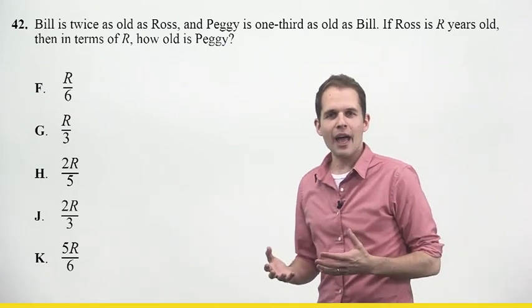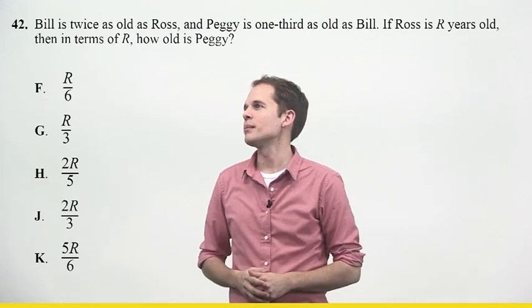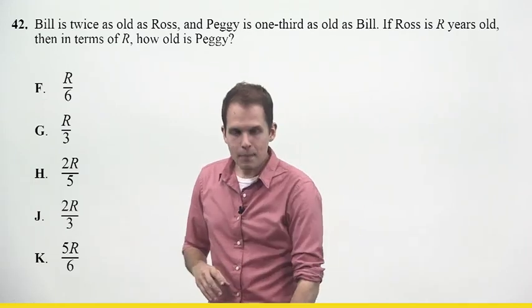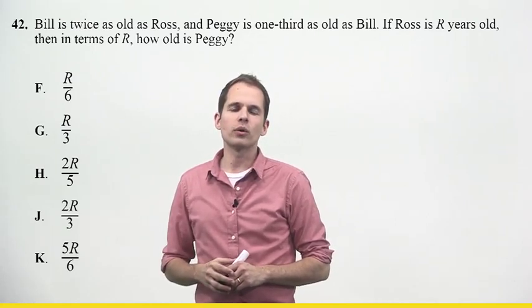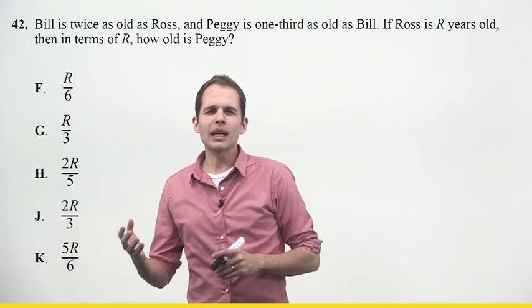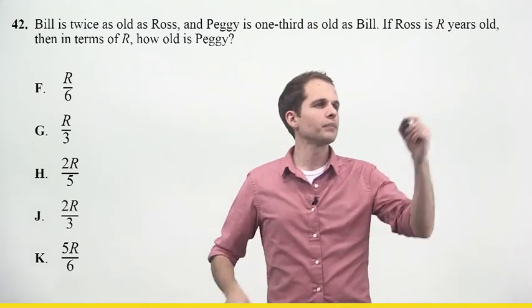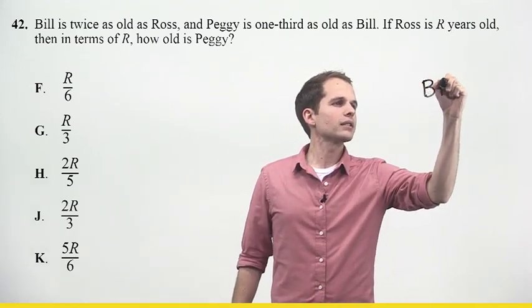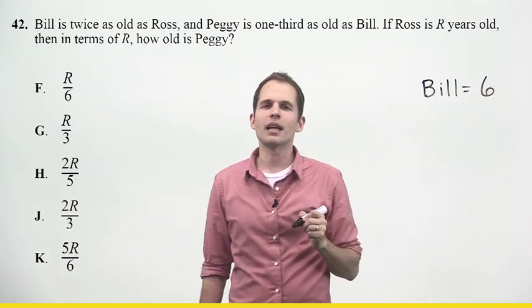So I could try to do all the algebraic manipulations, but we said plugging in is an option. So let's come up with some numbers. It says that Bill is twice as old as Ross, and Peggy is one-third as old as Bill. I'm doubling and I'm taking a third of something, so I want good numbers here. Let's say Bill is six. That's something that's twice something else and something I can take a third of.